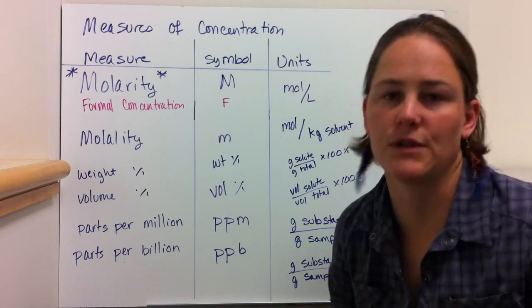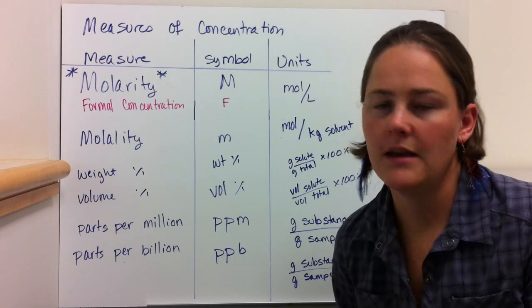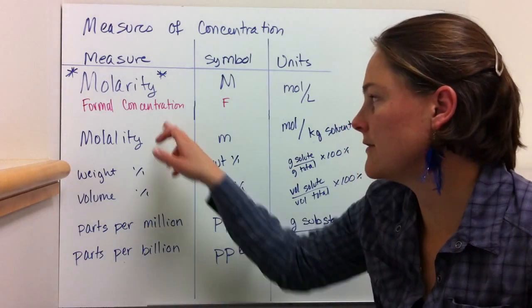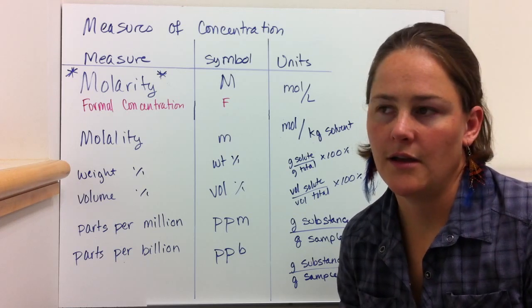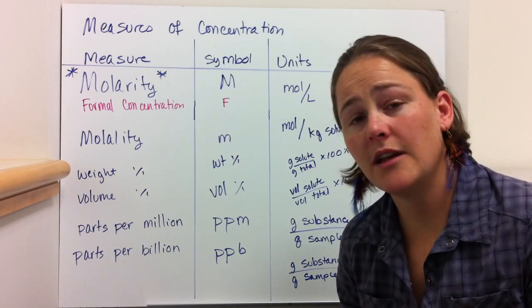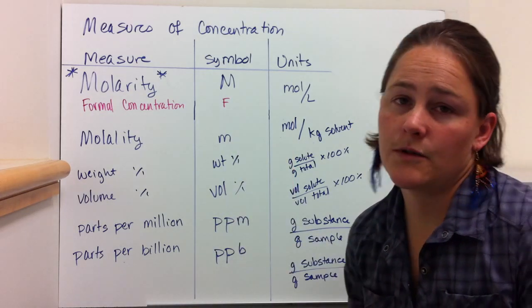So you just say that if it was all dissolved then the concentration would be this. It's a formal concentration because you don't actually necessarily know how much is dissolved, but if it all was, then that would be the concentration. The next most common maybe is molality.